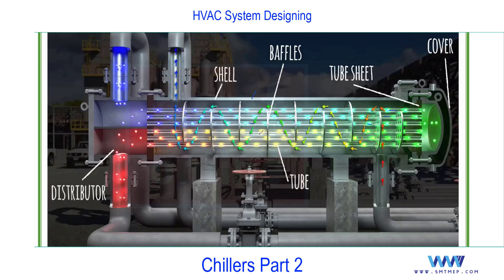To understand the water flow: the red color represents hot water in, and the blue color represents cold water out. Since water enters hot and exits cold, this is being used as an evaporator — it is used to cool the water. If it were used to cool the refrigerant instead, that would be the condenser. So in this image, with red as inlet and blue as outlet, we consider this as an evaporator.